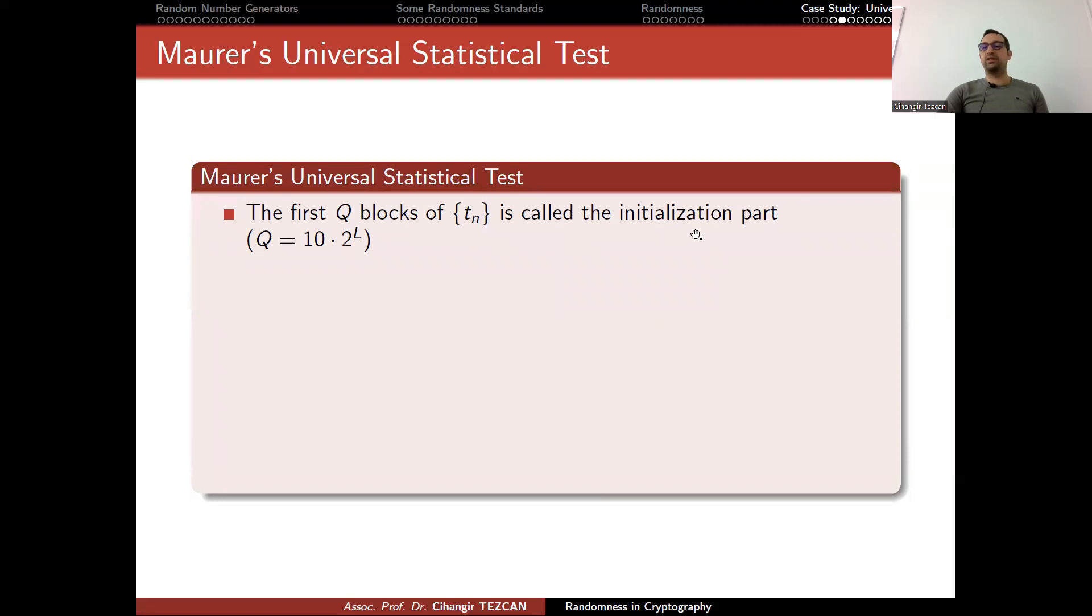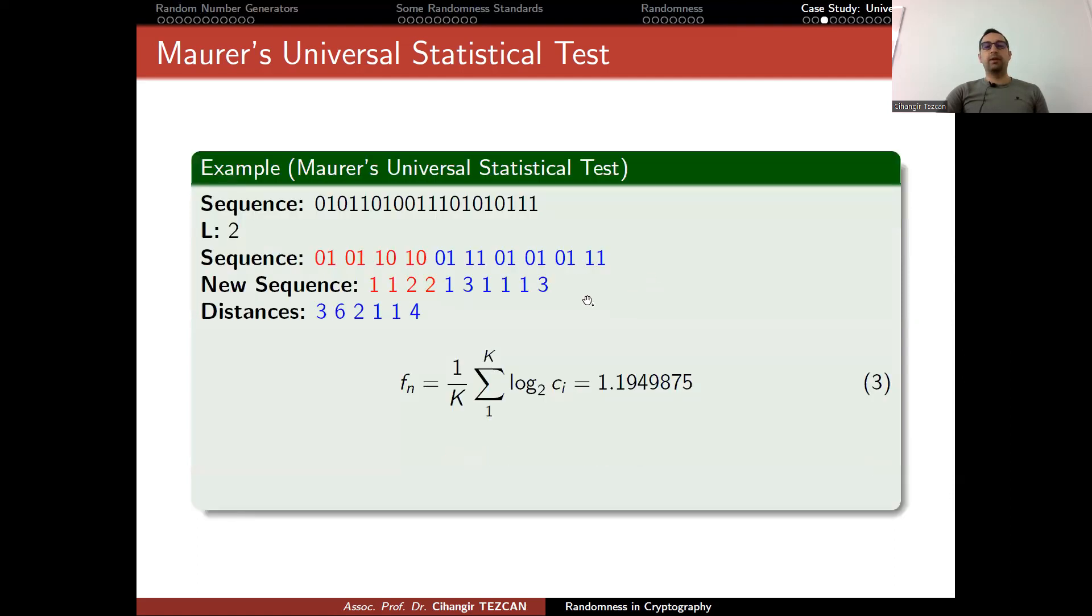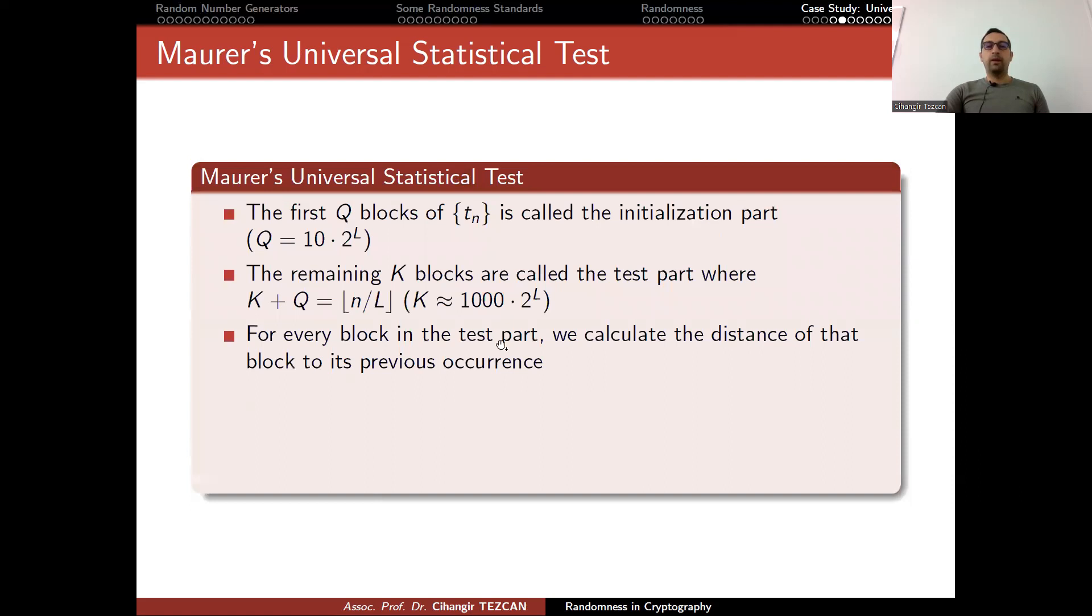The first Q blocks of t_n is called initialization parts. The remaining K blocks are called the test parts. In our example, initialization part was represented as red, and the test part was represented as blue. For every block in the test part, we calculate the distance of that block to its previous occurrence. If we denote these distances by c_i, the test statistic f_n is the multiplication of logarithms of these distances. You sum all of these values and divide it by 1 over K. This looks very similar to the definition of entropy.